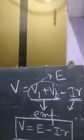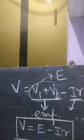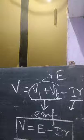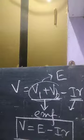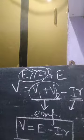Internal resistance plays a role only when the circuit is closed. It varies from cell to cell and is very much negligible when E is much greater than IR.